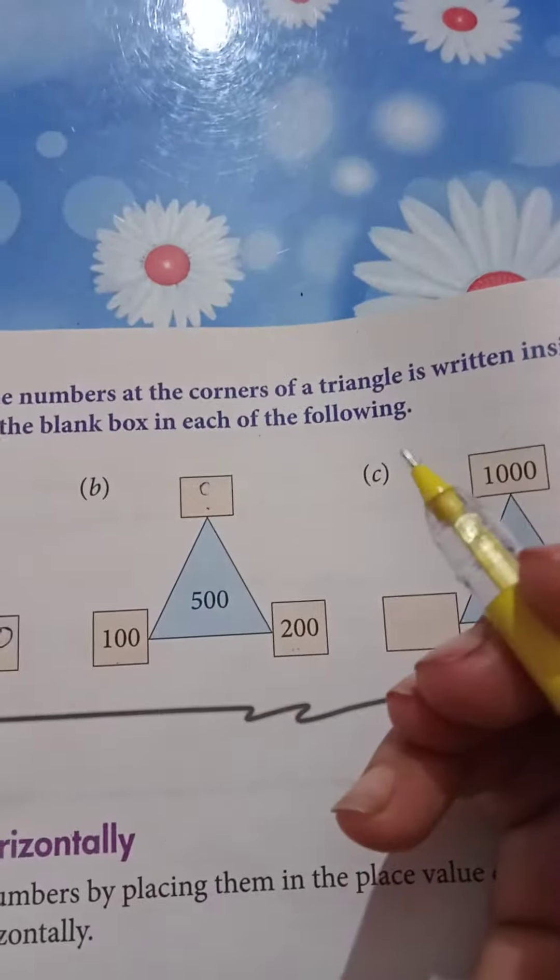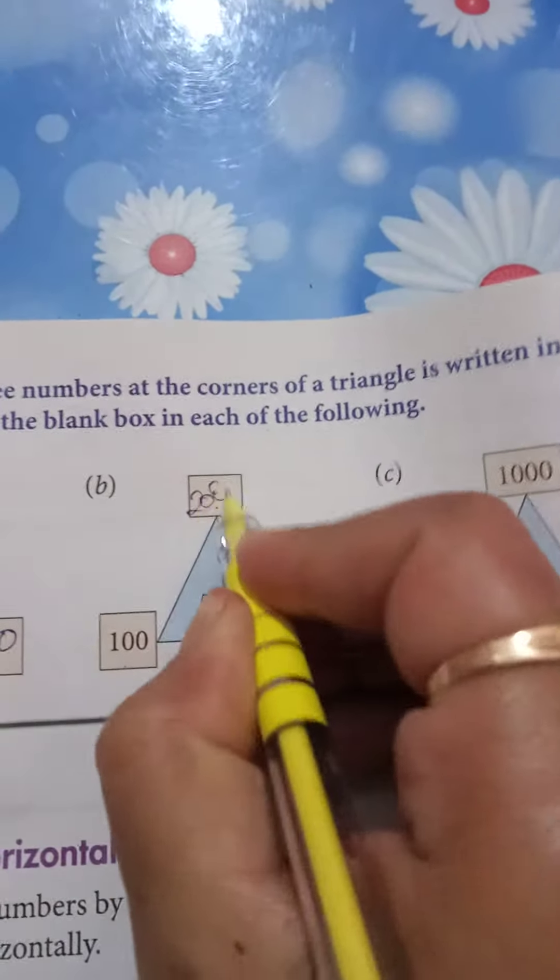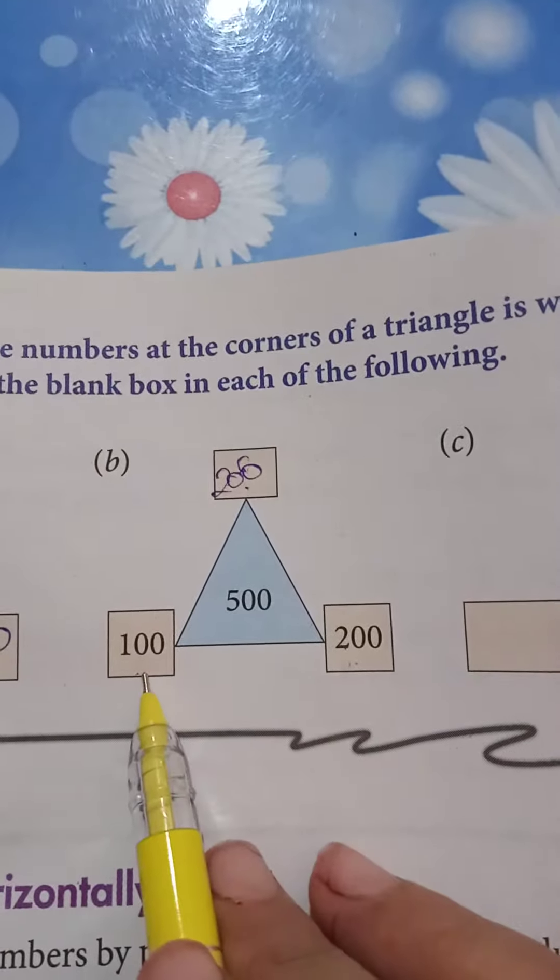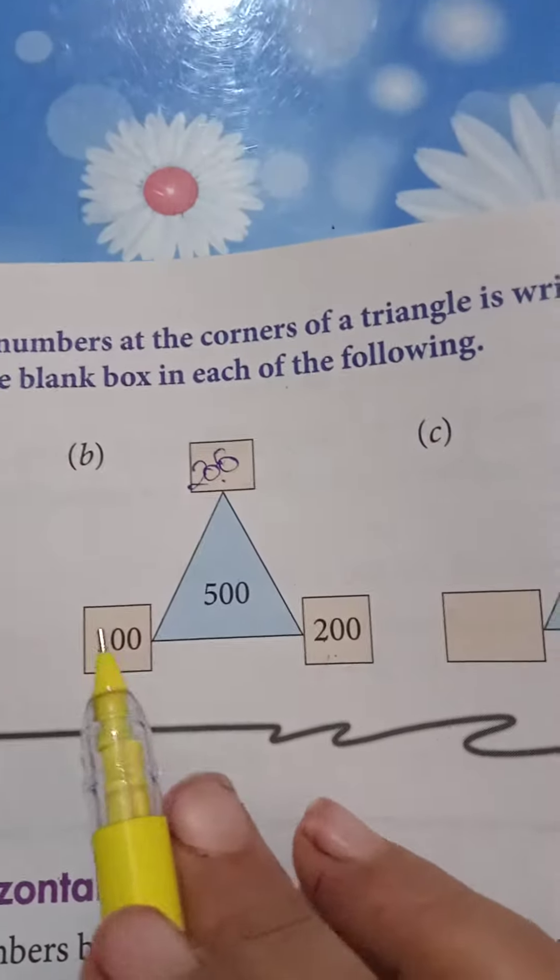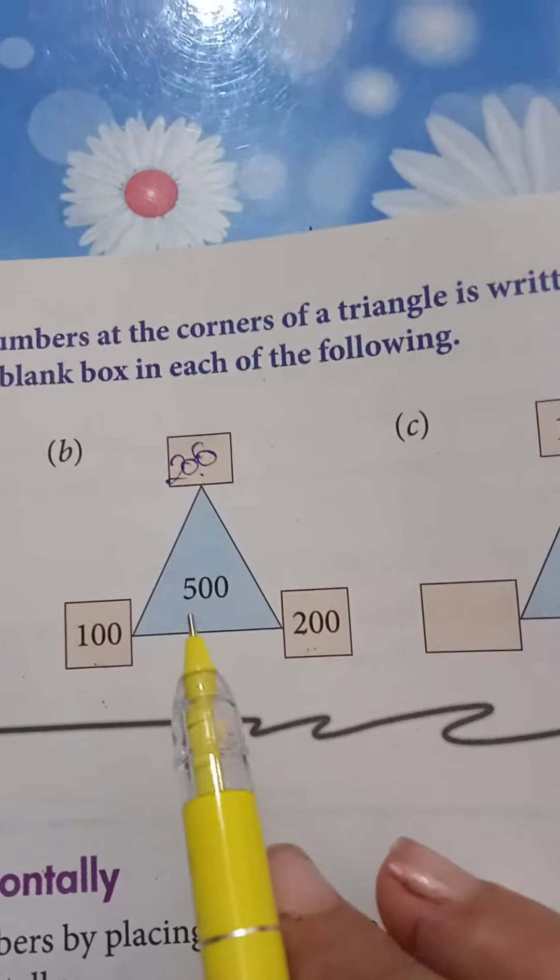You are very intelligent. So what do you want to write? 200. So 200 plus 100 is equal to 300 and 300 plus 200 is equal to 500.